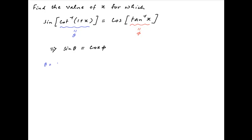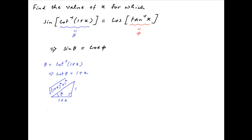Now theta is equal to cot inverse (1 plus x), therefore cot theta is equal to 1 plus x. Consider a right angle triangle with the angle between the base and the hypotenuse being theta. Since cot theta is equal to 1 plus x, the base is equal to 1 plus x and the perpendicular is 1. Therefore, using Pythagoras theorem, the hypotenuse is square root of (1 plus x) whole square plus 1.